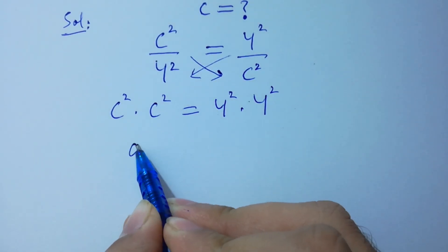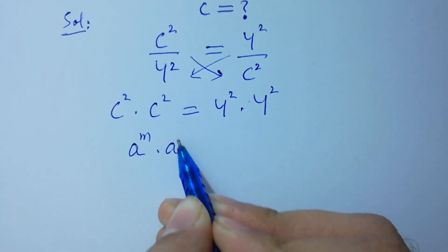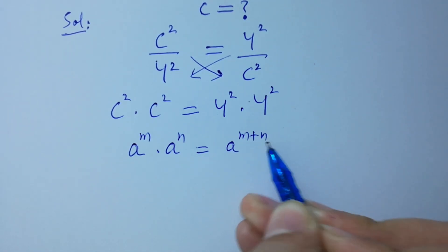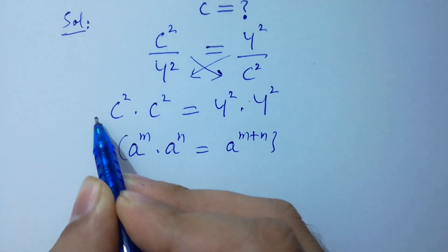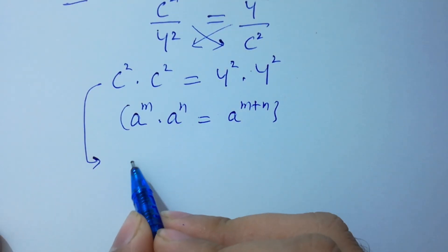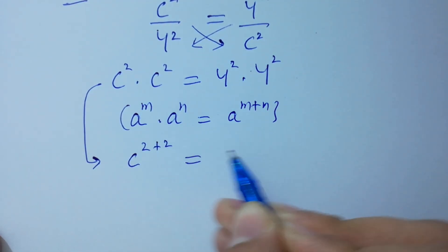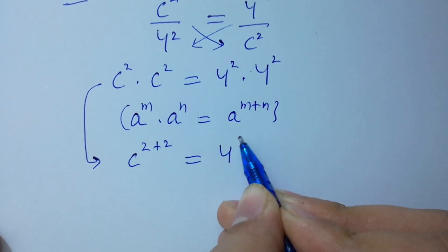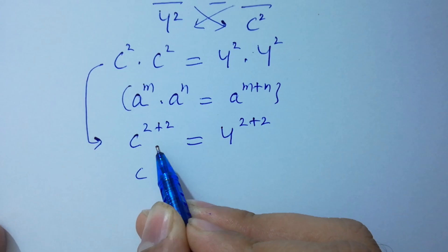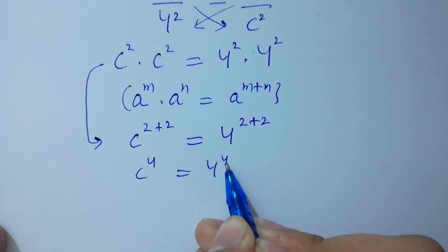Since a to the power m times a to the power n equals a to the power m plus n, so it will be c to the power 2 plus 2 equal to 4 to the power 2 plus 2, which gives c to the power 4 equal to 4 to the power 4.